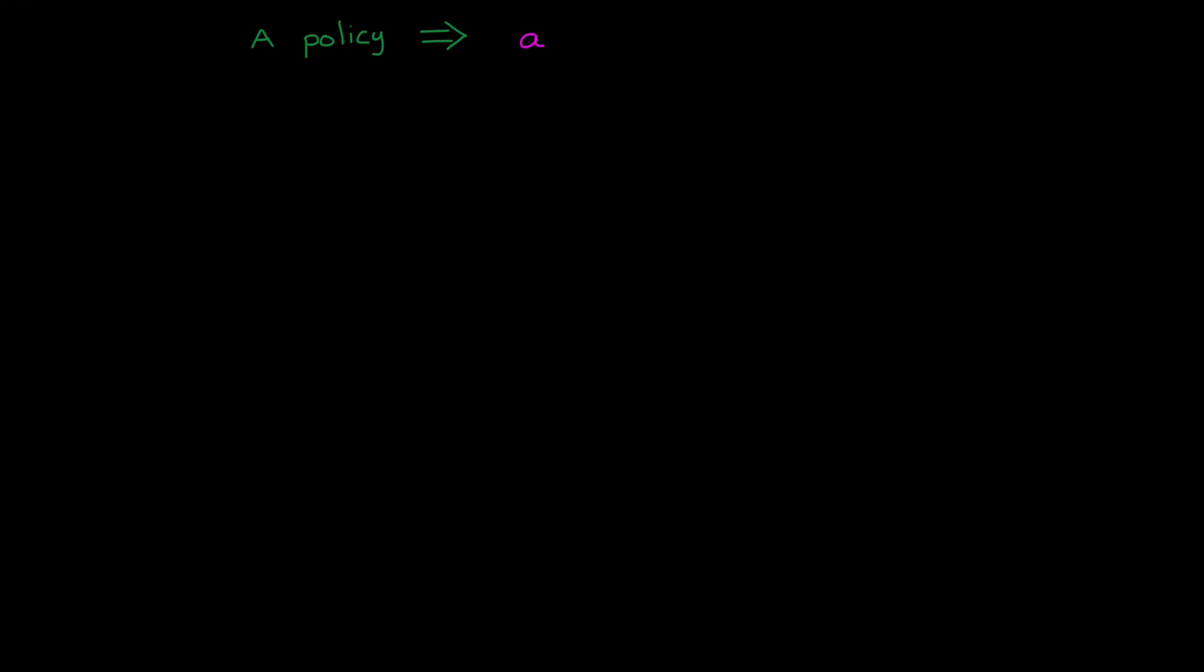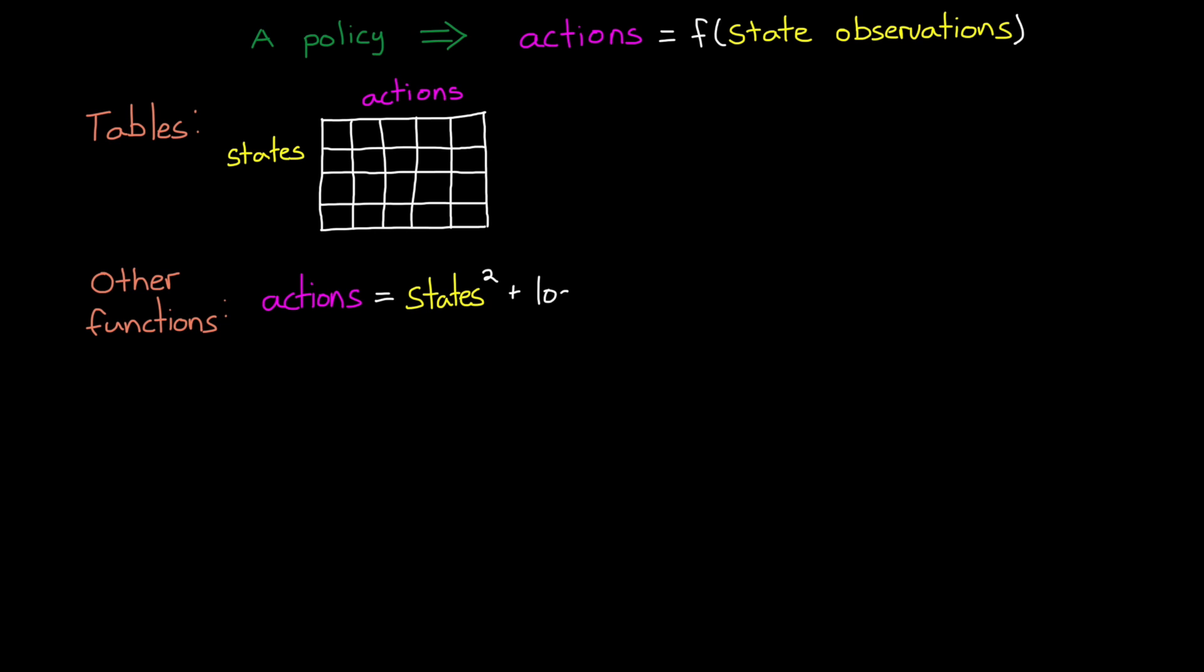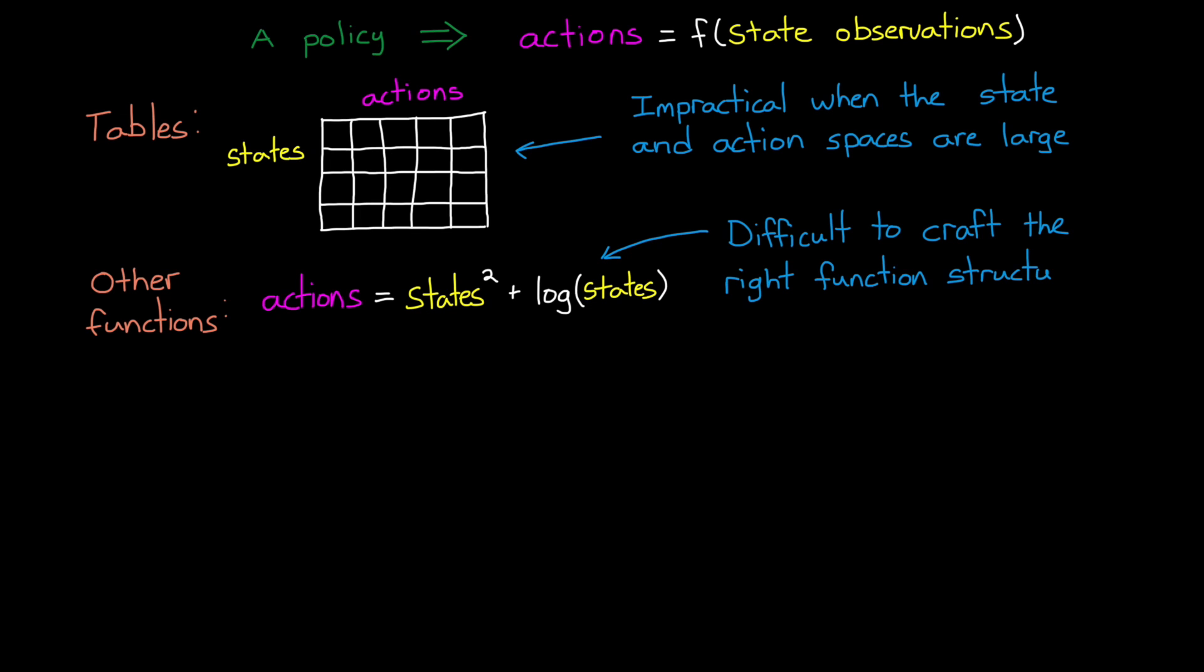Now, last time we ended by explaining how a policy is a function that takes in state observations and outputs actions. And then I briefly introduced the idea of why tables, and specifically defined functions, aren't a great solution in many cases. This is because tables are impractical when the state and action space get really large. And also, it's difficult to craft the right function structure for complex environments.